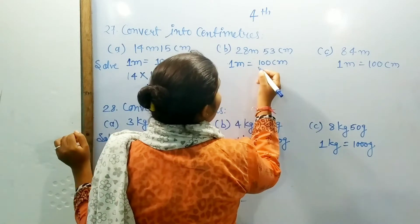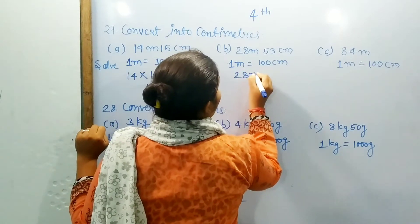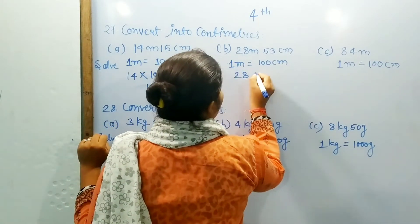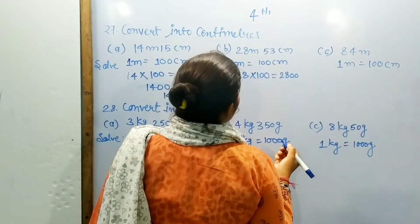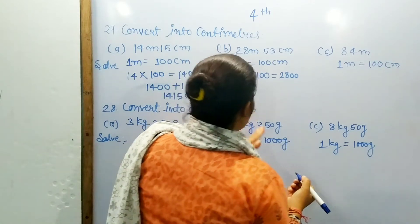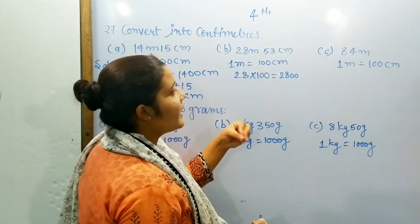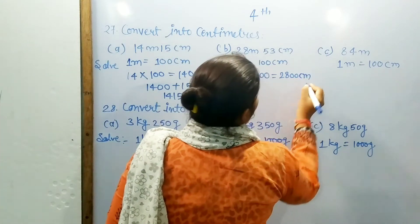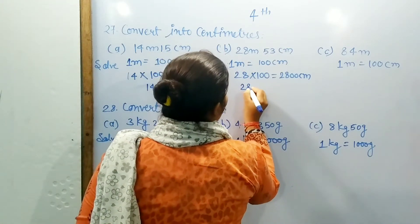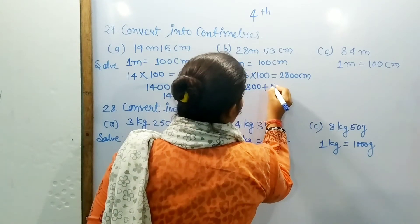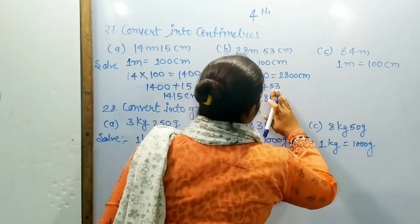1 meter is equal to 100 cm. But 40, we convert — what is 45 to 100? So 20 to 100 is equal to 2800. Okay, now 20 cm — this is equal to 2853 cm.